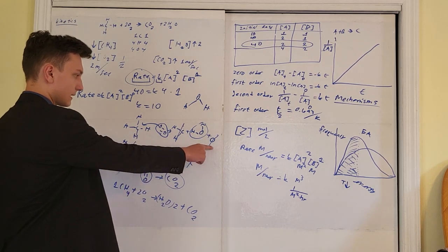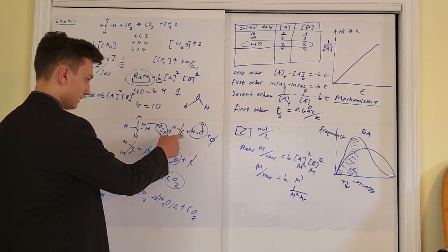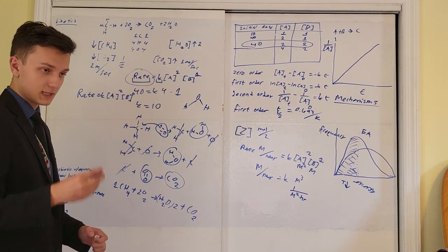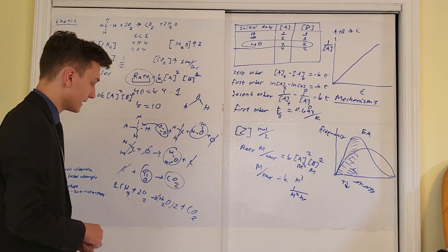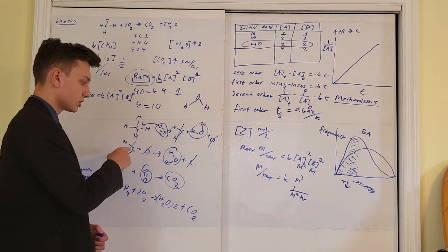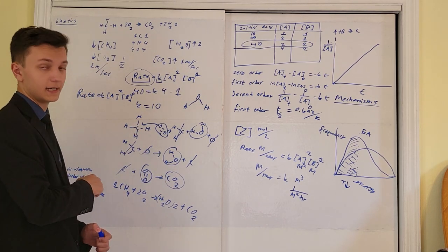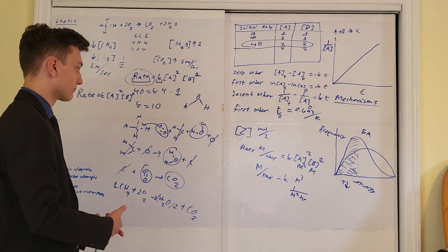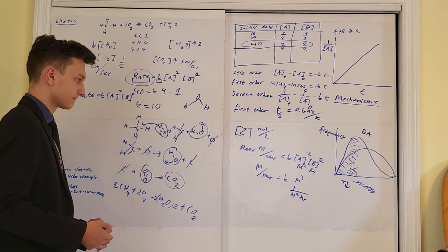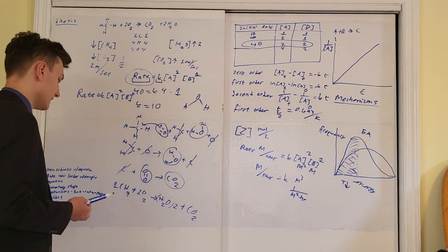The species I crossed out are called intermediates. An intermediate is something produced in the reaction mechanism and then consumed, such that it does not appear on the reactant side or the product side of the overall equation. It is produced only to be consumed in a later step. The free oxygen atom in our example was also an intermediate.